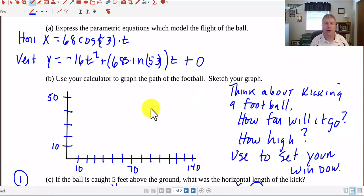Next we'll use our calculator to graph the path of the football and make a sketch of that graph. In setting up your window, think about kicking a football. How far will it go? That will be what you want to set your x-axis to, because that's your horizontal distance. And also think about how high it will go on the y-axis. Use that to think about setting your window.